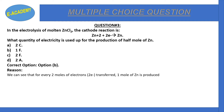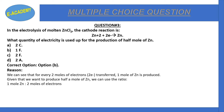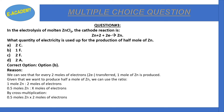For every 2 moles of electrons transferred, 1 mole of zinc is produced. Given that we want to produce 0.5 moles of zinc, we use the ratio: 1 mole Zn requires 2 moles electrons. So 0.5 moles Zn × 2 = x, giving x = 1 mole of electrons.